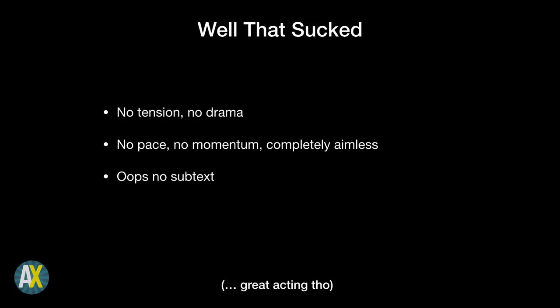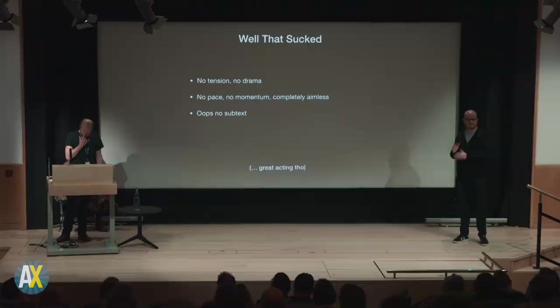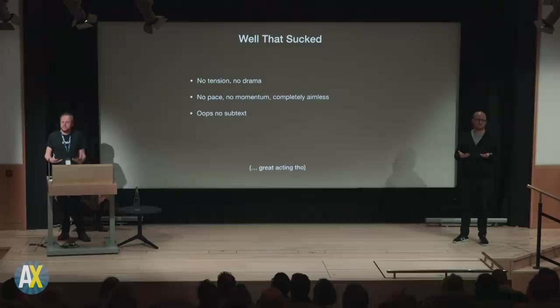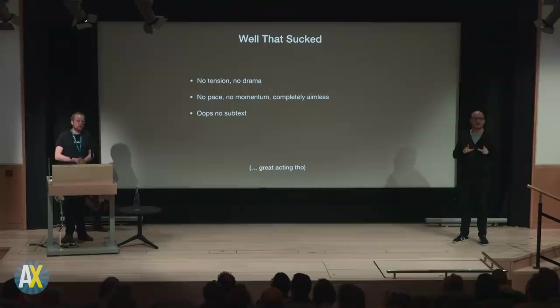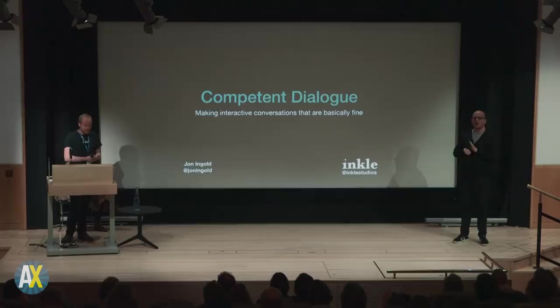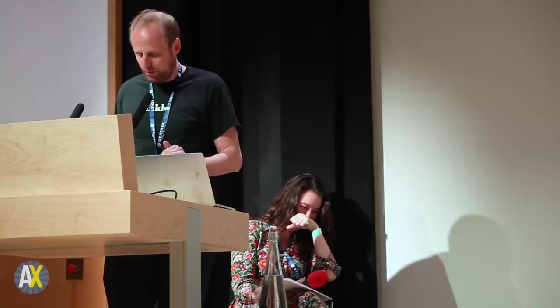Everything that everyone is saying is what they are saying, and they're not saying anything that they're not saying. I'm not going to lecture you about subtext. But I have an admission: I titled my talk 'Sparkling Dialogue' — that is not actually the title. I didn't think you'd come if I called it what I actually want to call it, which is 'Competent Dialogue.' How can we make interactive conversations which are just basically fine? Let's lower our bar to something which is just not terrible.